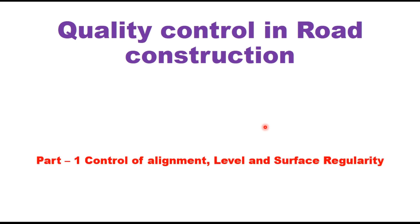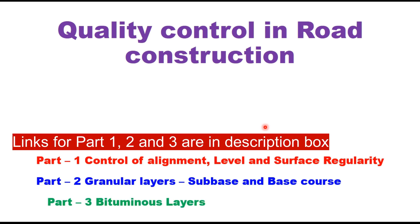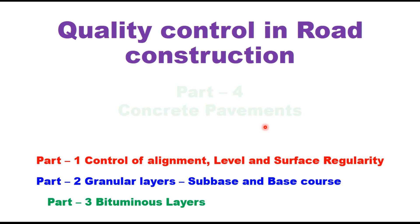Hello friends, today we will discuss quality control in road construction, and this is the fourth part in the series. In the first part we discussed control of alignment, level and surface regularities. In the second part we discussed quality control tests for general layers like sub-base and base course layers. In part three we discussed bituminous layers, different types of bituminous construction and quality control tests at site. Today in this part we will discuss concrete pavements.